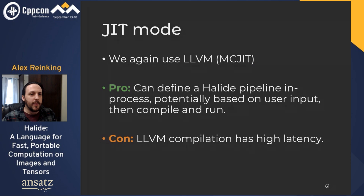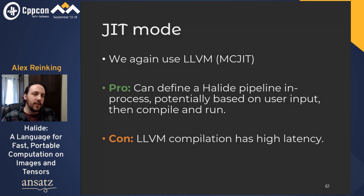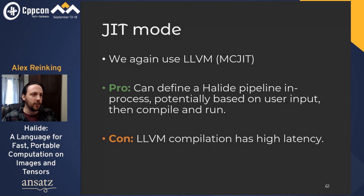LLVM has a very robust JIT module called MCJIT that we use — it's cross-platform and well-tested. JIT mode is mostly useful when the structure of your pipeline might vary at runtime, or for rapid development. This is because LLVM's optimization passes are slow and introduce a good bit of latency. We have a caching mechanism that offsets this a bit, but if you don't need dynamic pipelines, the ahead-of-time compilation mode might better suit your needs.